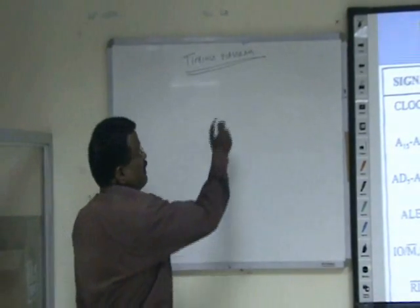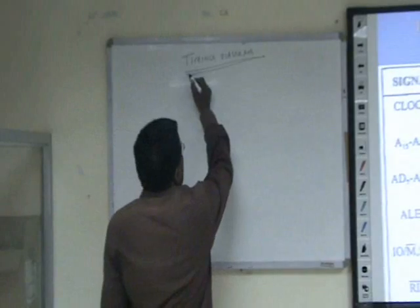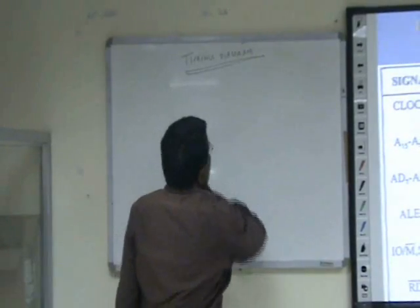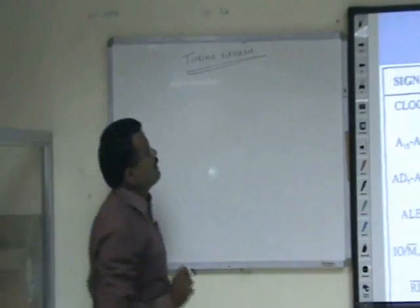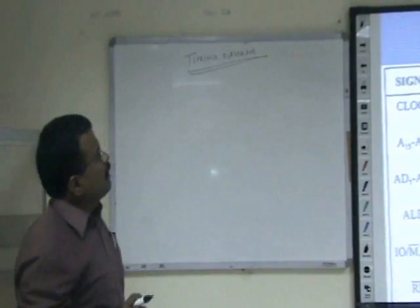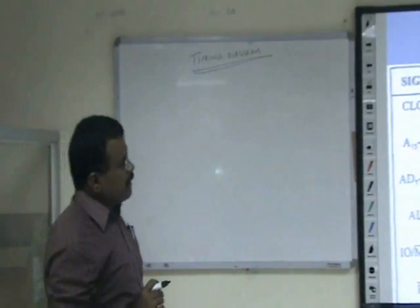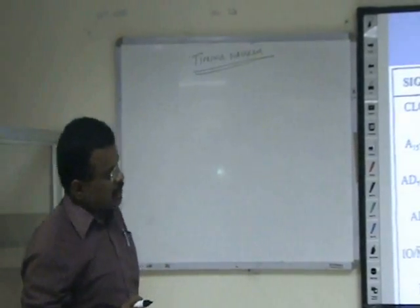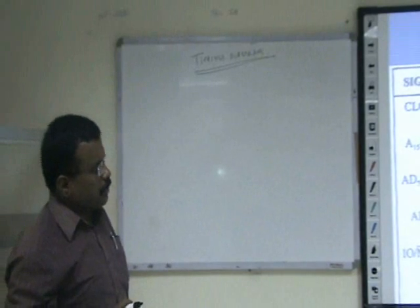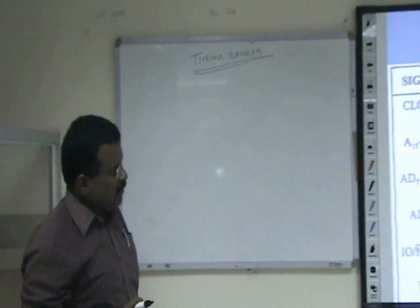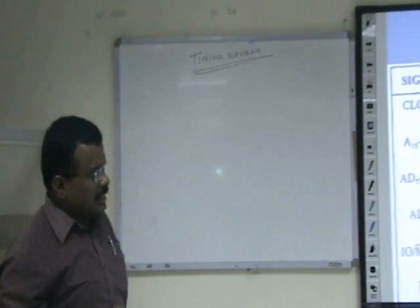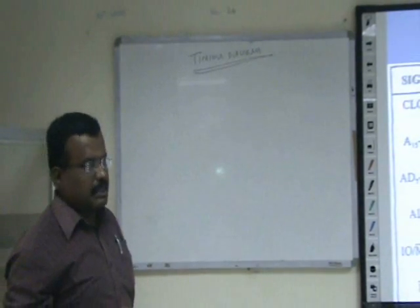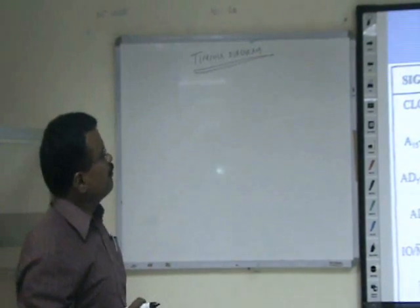Timing diagram. The timing diagram shows the graphical representation of all the timing and control signals generated from the processor whenever an instruction is being executed.